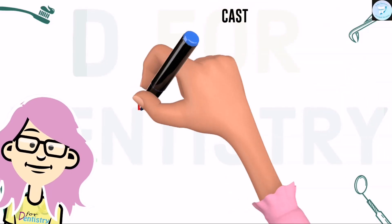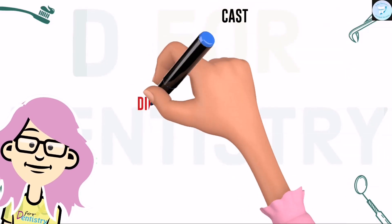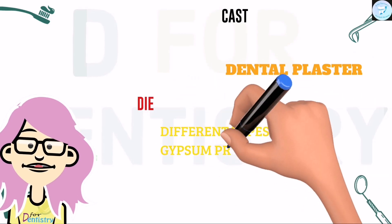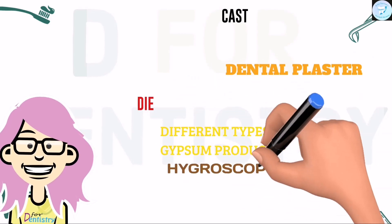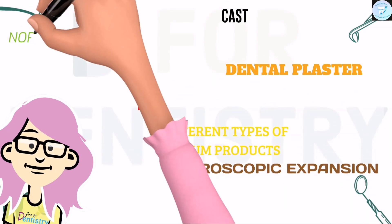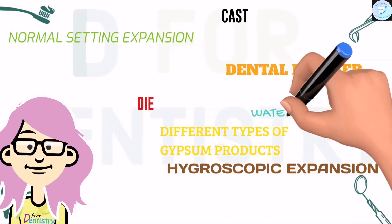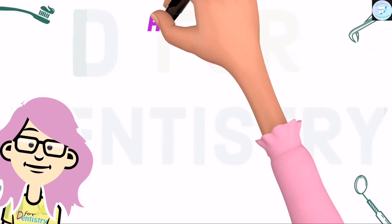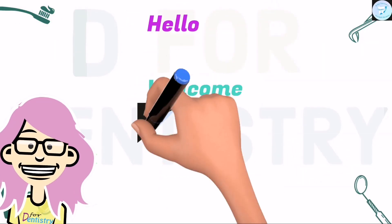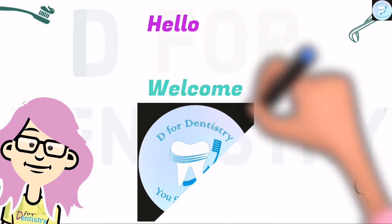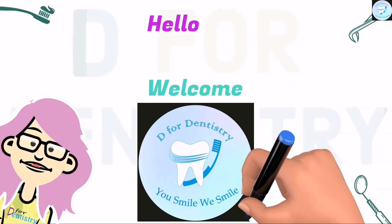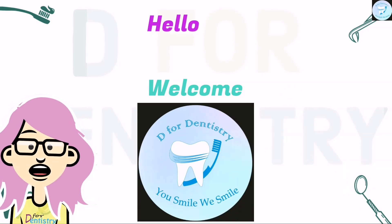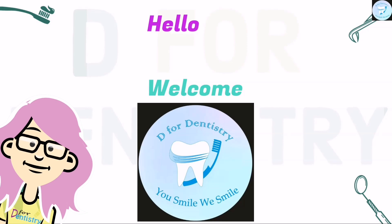Hello and welcome to our channel D for Dentistry. In today's video, we are going to discuss some viva questions on gypsum products — including cast, die, dental plaster, different types of gypsum products, hygroscopic expansion, normal setting expansion, water-powder ratio, and many more. Let's get started.